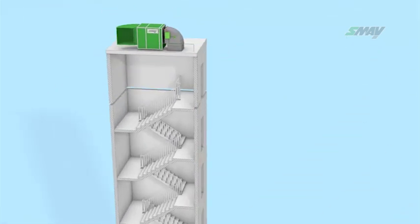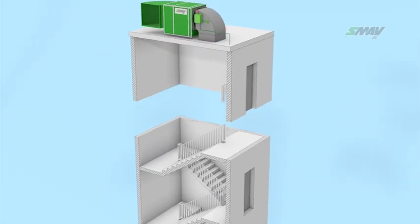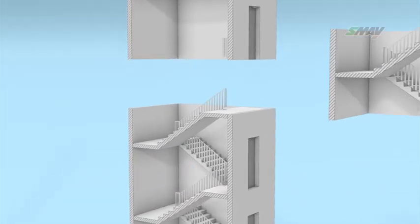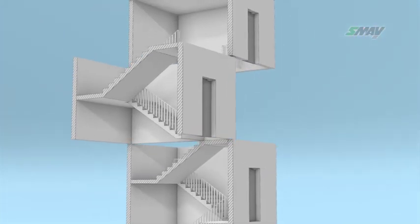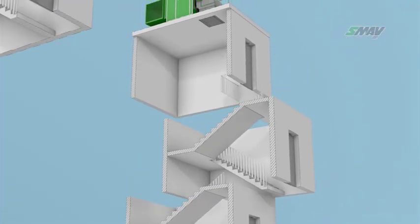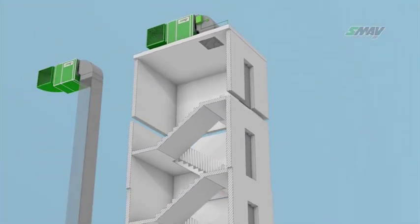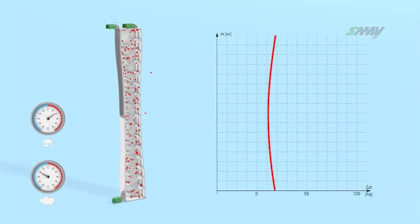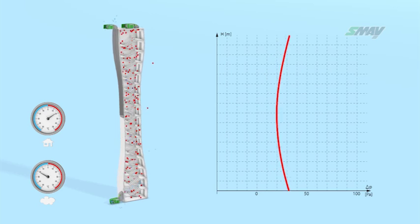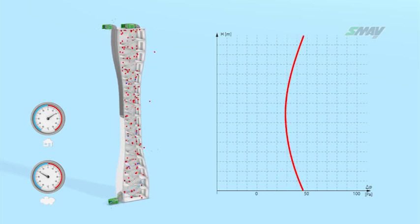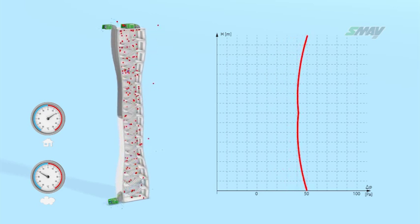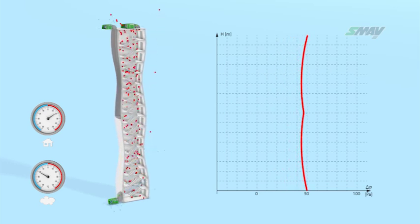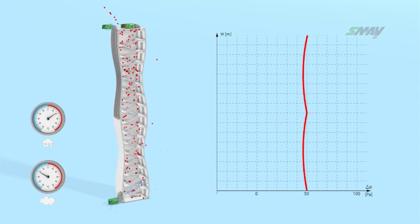For stairwells in buildings which are more than 35 meters tall, an additional air supply point is required every 10 floors. The air supply to the stairwell is activated automatically once pressure drops below a preset value, which may be caused by leaks and opened emergency exits.